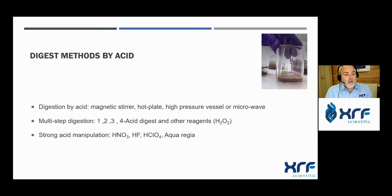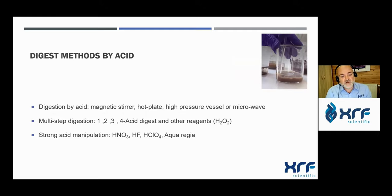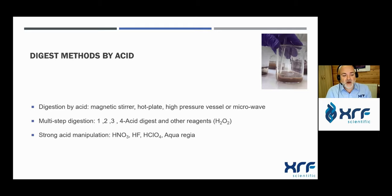The first and most used method is digestion by acid, done on a magnetic stirrer, hot plates, high pressure vessels, or by microwave. This type of digestion sometimes requires multi-step procedures using one, two, three, or four acids, or other reagents like peroxide. This method requires the manipulation of strong acids such as hydrofluoric acid, perchloric acid, and aqua regia.